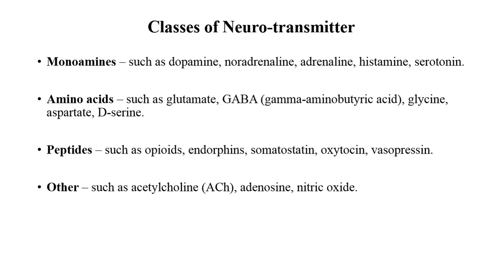The seven important neurotransmitters present in the human body are: acetylcholine, dopamine, gamma-aminobutyric acid (GABA), glutamate, histamine, norepinephrine, and serotonin. On the basis of chemical composition, neurotransmitters are divided into monoamines (dopamine, noradrenaline, adrenaline, histamine, serotonin), amino acid-based neurotransmitters (glutamate and GABA), peptides (opioids, endorphins, somatostatin, oxytocin, vasopressin), and others including acetylcholine and nitric oxide.